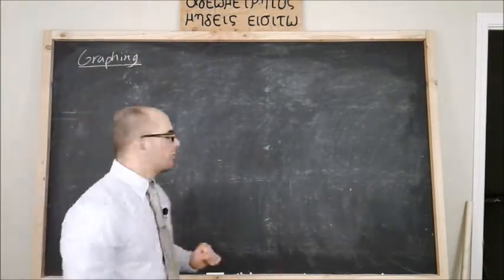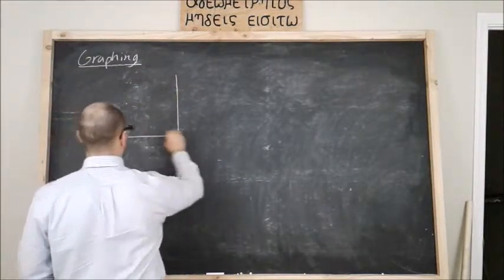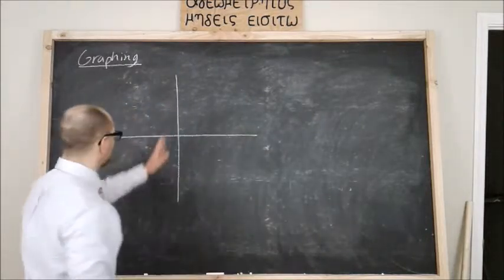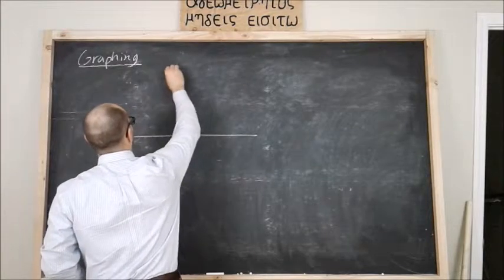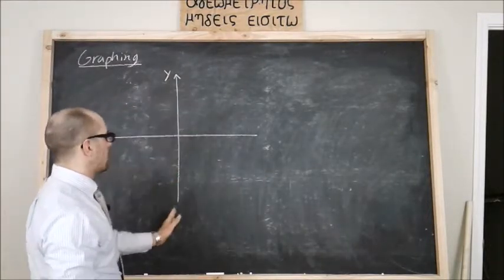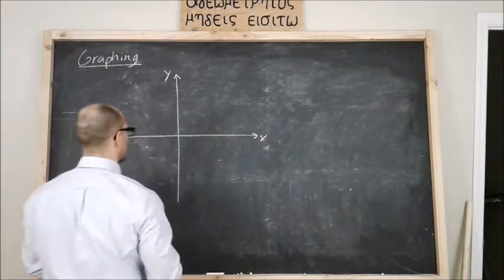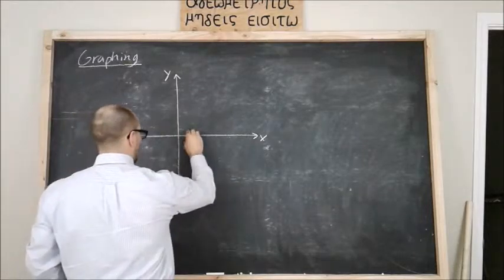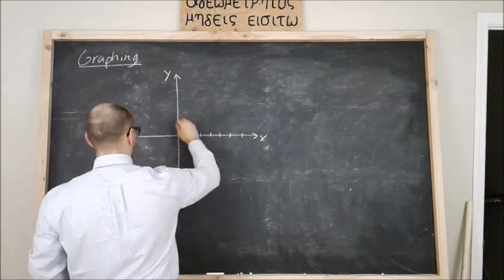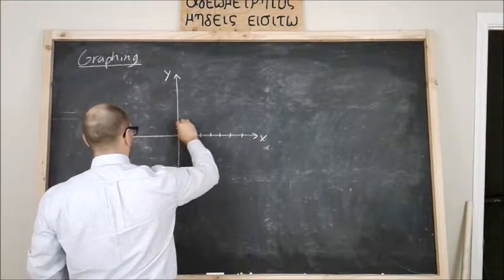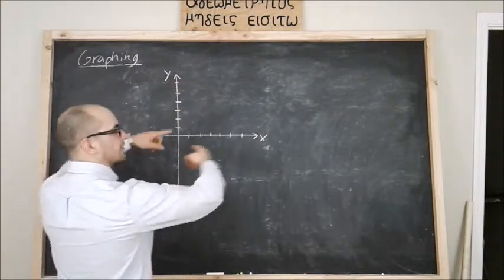A few things to cover first. Remember we have our Cartesian coordinates here. This is the y-axis, the vertical is the y-axis, the horizontal is the x-axis. And we can number these one, two, three, four, five, six, etc. And again in the y, one, two, three, four, five, six. You can go as far as you want.